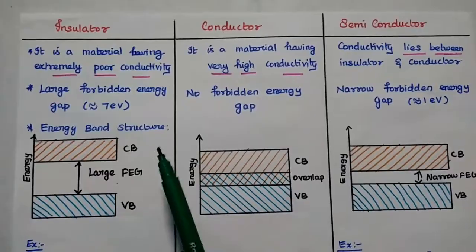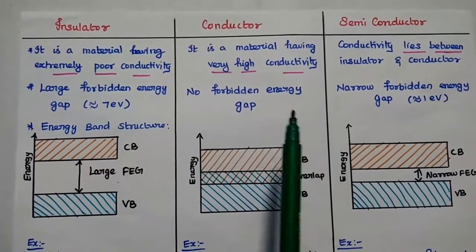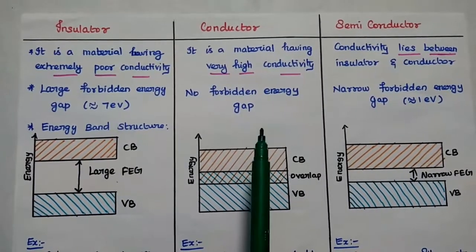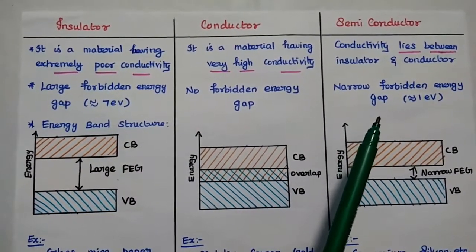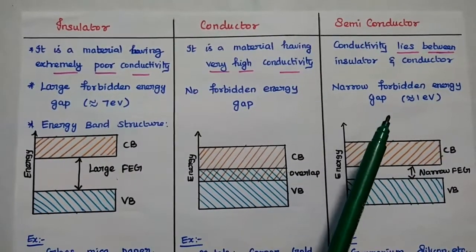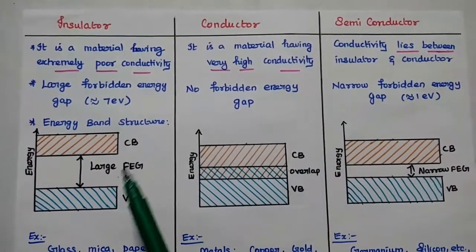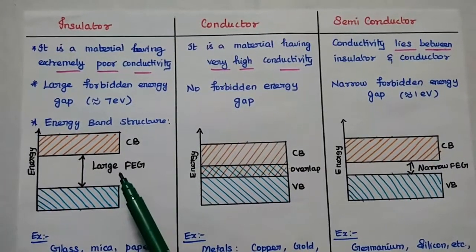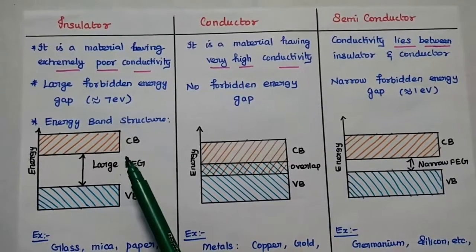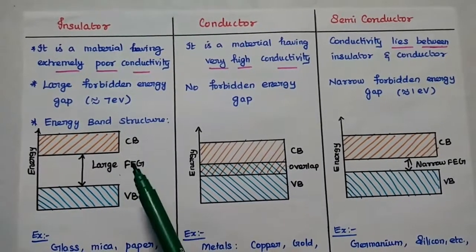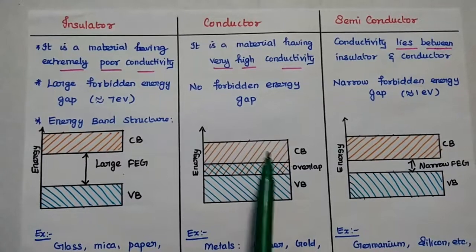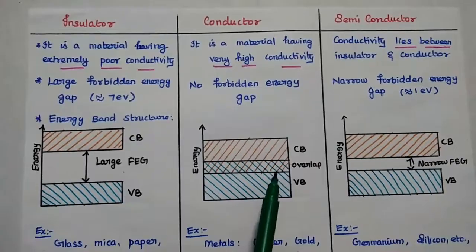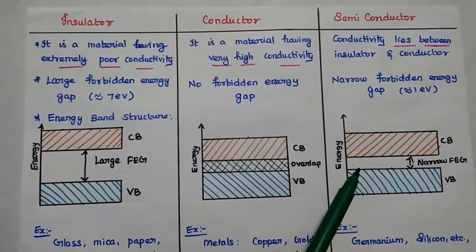In comparison: an insulator has extremely poor conductivity, a conductor has very high conductivity, and a semiconductor has conductivity lying between insulator and conductor. In terms of energy band structure, an insulator has a very large forbidden energy gap — approximately 7 electron volts for diamond. There is no forbidden energy gap for a conductor because the conduction band and valence band overlap each other. For a semiconductor, the energy gap is narrower.